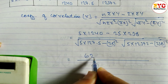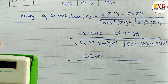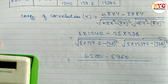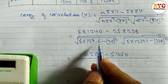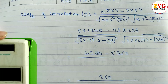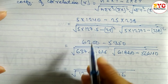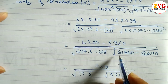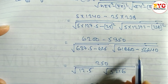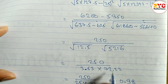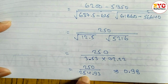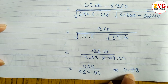Using a calculator: 5 × 1240 = 6200, and 25 × 238 = 5950. Subtracting gives the numerator 6200 − 5950 = 250. For the denominator: 5 × 127.5 = 637.5 minus 25² = 625 gives 12.5; and 5 × 12372 − 238² gives 5216. So we get √12.5 × √5216, which equals 72.22 approximately, giving a denominator of about 5254.93. Dividing 250 by 5254.93 gives r ≈ 0.98.